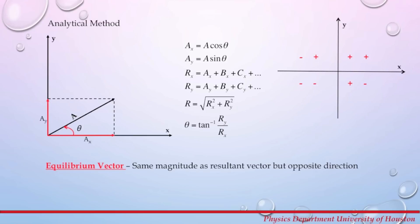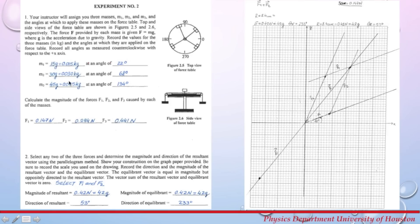For this experiment, we will use a 15 gram mass, 30 gram mass, and 45 gram mass at angles of 22 degrees, 68 degrees, and 134 degrees. Note these are only examples; your TA will give you the actual masses and angles. The next step is to calculate the forces. Since you are applying masses on the force table, the only acceleration is gravitational, so your forces are mass times g. Calculate force 1, force 2, and force 3, remembering to convert masses to kilograms.